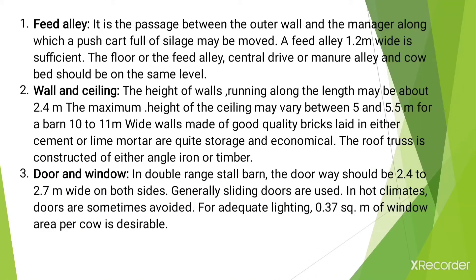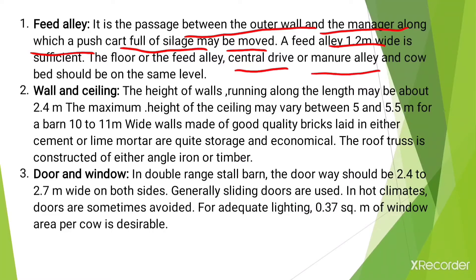The next component is the feed alley. It is the passage between the outer wall and the manger along which a push cart full of silage may be moved. A feed alley 1.2 meters wide is sufficient. The floor of the feed alley, the central drive or manure alley, and the cow bed should all be on the same level.